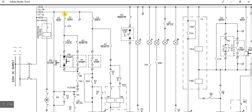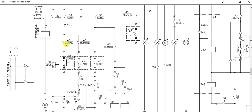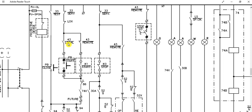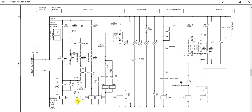If the breaker is in service position, the path comes this way. Now, if the control selector switch is in local position — meaning you want to operate from the local switch — this path will be followed. When you press the start push button, the path goes through and it will energize the closing coil of the breaker.